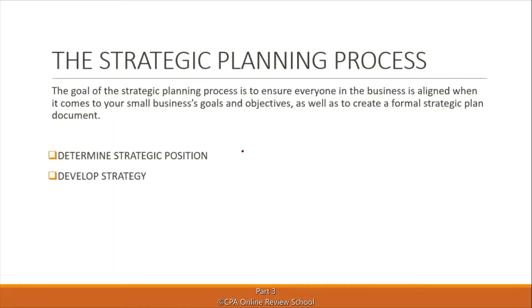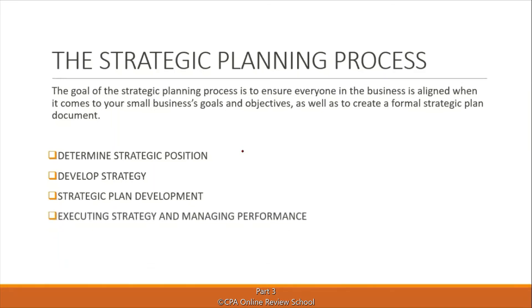After identifying those, you develop your strategy — the specific things you will do, which are still general at this stage. Later, you break these down into tactical plans or operational plans — step-by-step actions to achieve your goal. Next is strategic plan development: you write it down, formalize it, then execute the strategy. During execution, you must complement this with monitoring so you know if everything is under control and according to plan.